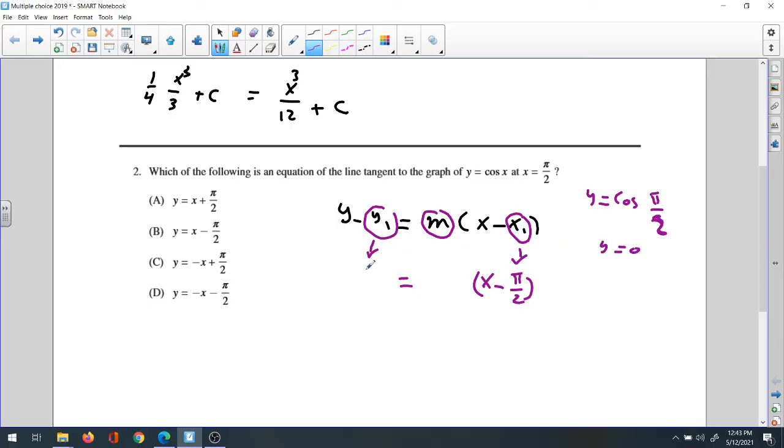So this is 0, so this will be 0 here. And we still have the slope. How to find the slope? The slope is the derivative of y